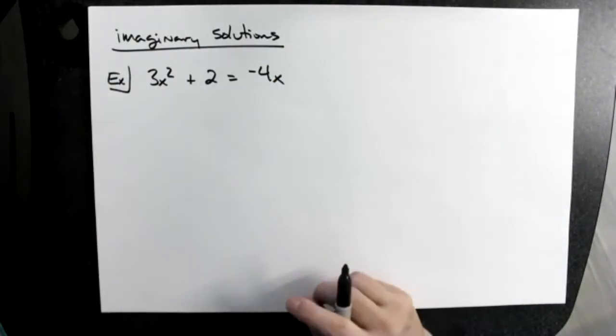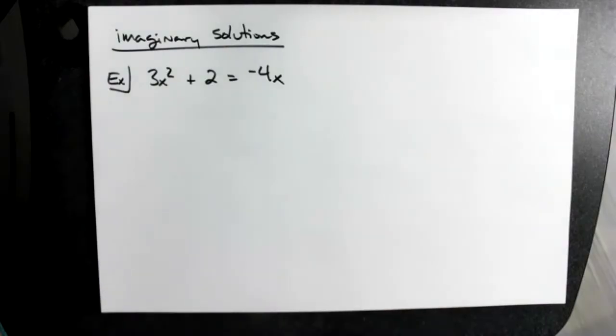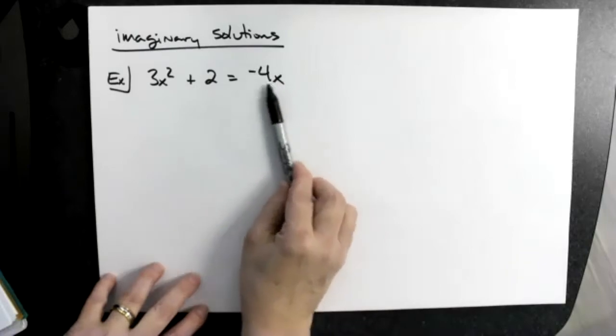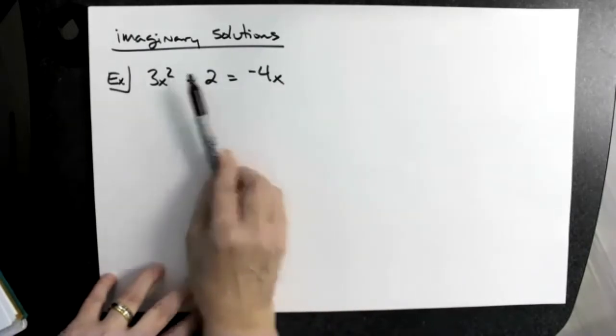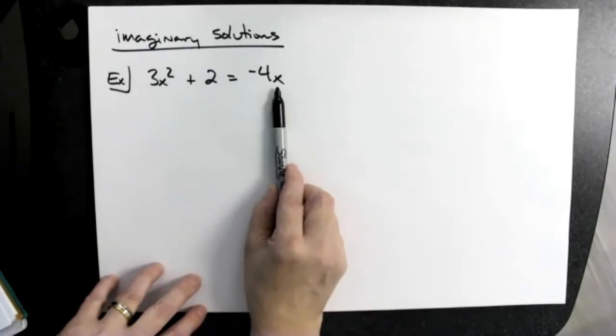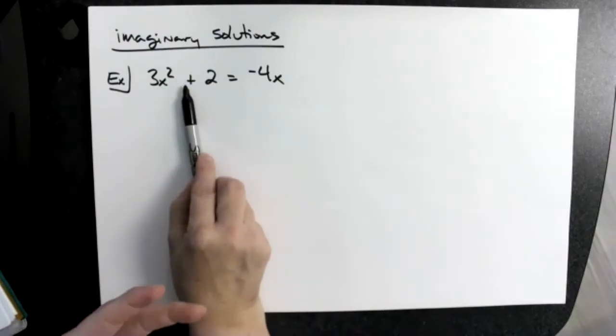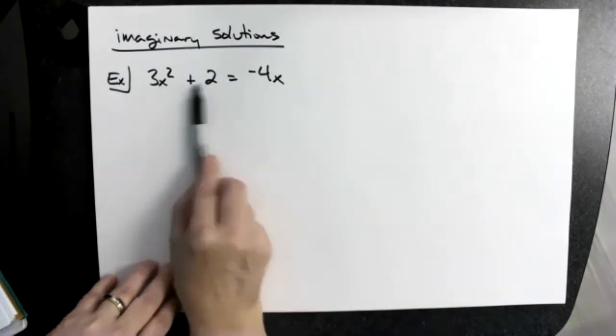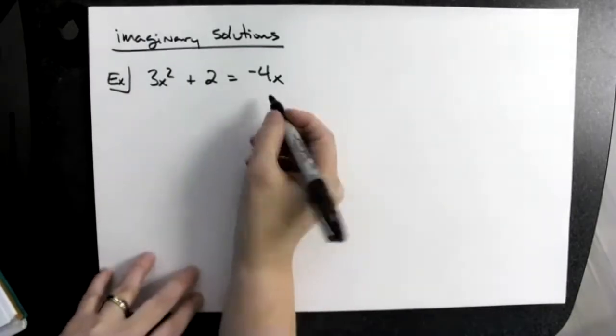In this scenario, obviously not in standard form, so we want to move it so that it is. This term right here needs to be moved over to the left. When I do that, I'm going to put it in the middle because I want it to be in standard form. When I choose to add 4x to both sides of the equation, I can put it anywhere I want.